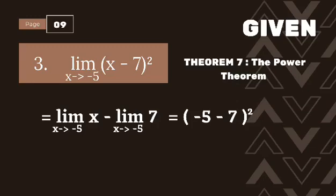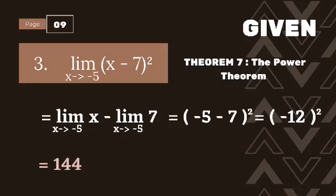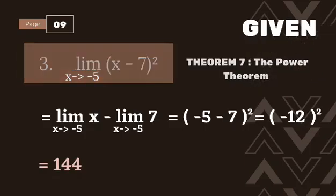We simplify: negative 5 minus 7 equals negative 12. So negative 12 squared is equal to 144.